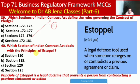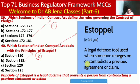Next MCQ: which section of the Indian Contract Act deals with the principles of estoppel? Whether Section 110, 115, 120, or 125. Here B is the right option — Section 115. Estoppel is a legal defense tool used when someone renounces or contradicts a previous agreement or claim. The principles of estoppel is a legal doctrine that prevents a person from contradicting a previous statement or action.